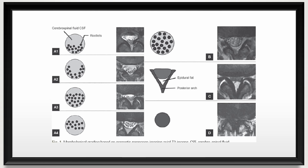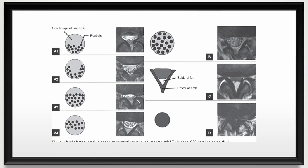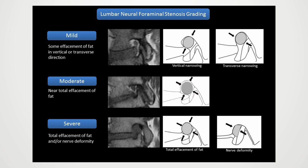Please familiarize yourself with the MRI grading systems for central and foraminal stenosis. Typically, central stenosis grading is based on axial T2-weighted images, while foraminal stenosis is conventionally assessed using sagittal scans. However, in instances where it's permissible, I opt for oblique sagittal scan images to guide the evaluation of foraminal stenosis.